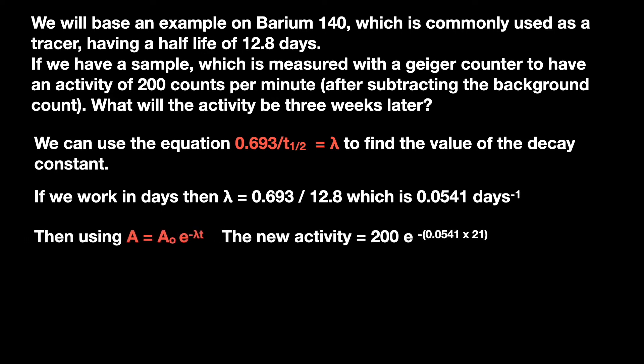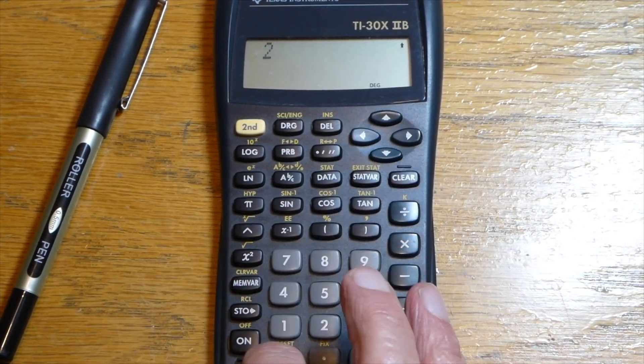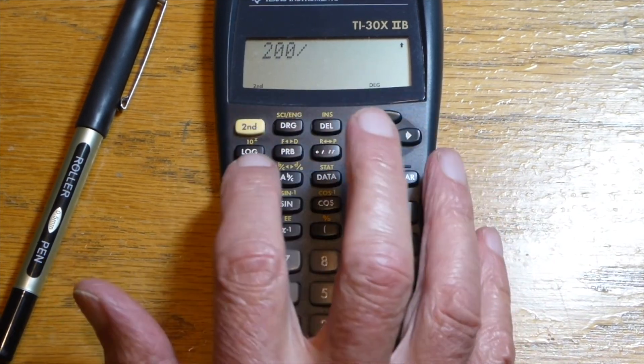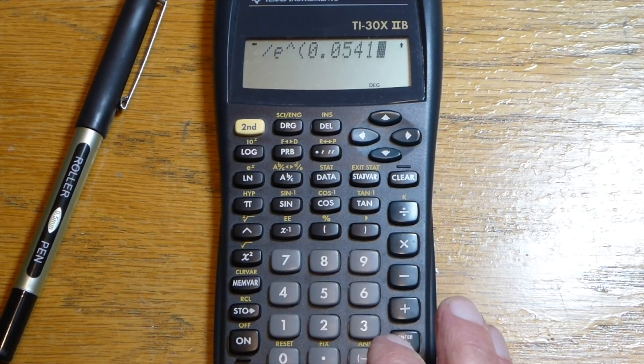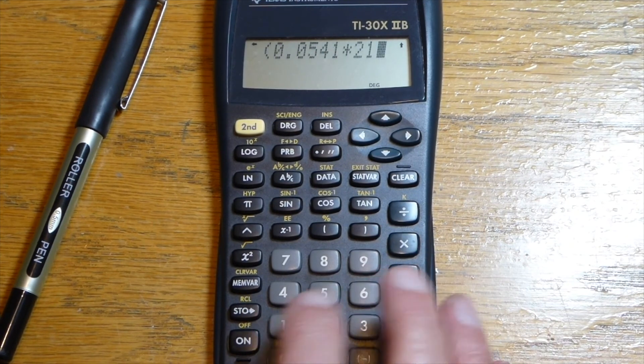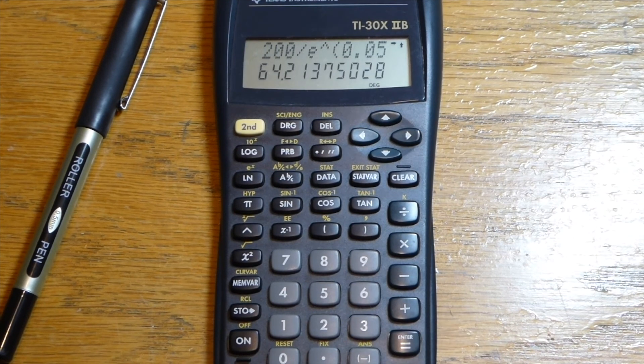We'll now use a second equation to work out the activity after this 21 days. Substituting in the values as you can see, we'll rearrange that to get rid of the minus sign. So, using a calculator to make it a bit easier, we have 200 divided by e to the power of 0.0541 multiplied by 21. That comes out at 64.2.